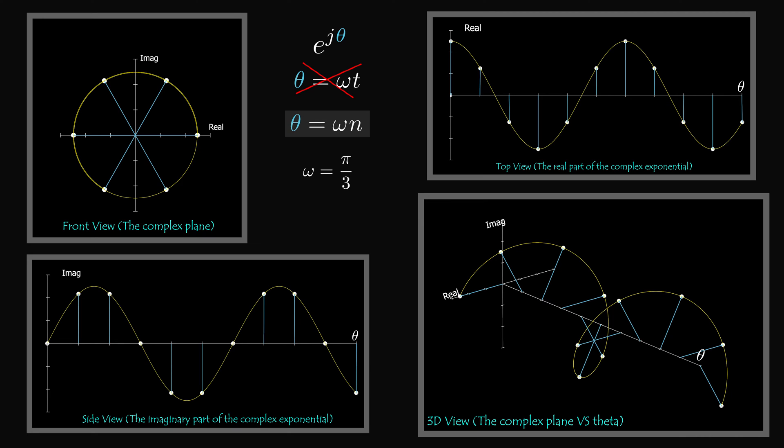Since n is an integer, the angles of the samples constructing the signal are integer multiples of each other. Meaning if omega is pi over 3, the first sample is at angle pi over 3, the second at 2pi over 3, the third at 3pi over 3, the fourth at 4pi over 3, and so on. This is a very interesting phenomenon that doesn't happen in continuous time.